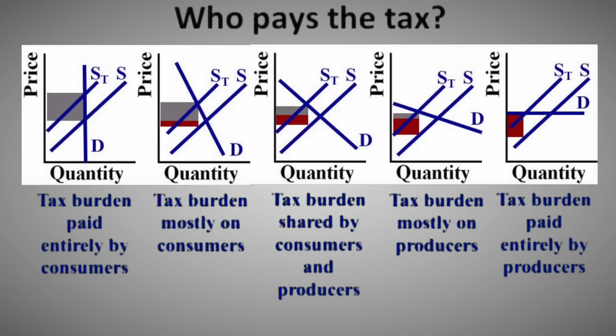When the demand is relatively inelastic, the consumers pay the majority of the tax, just like the question we saw earlier. When the demand and the supply have the same elasticity, then consumers and producers share the tax equally. When the demand is more elastic than the supply, then producers are going to pay more of the tax. And when the demand is horizontal, or perfectly elastic, the producers are going to pay all of that tax.